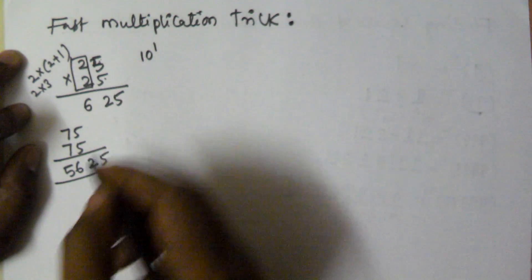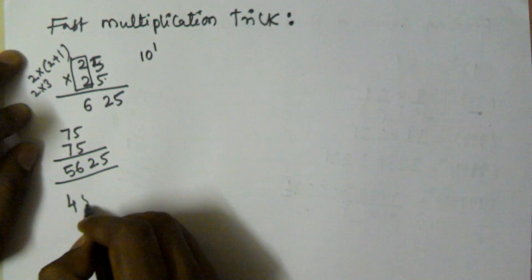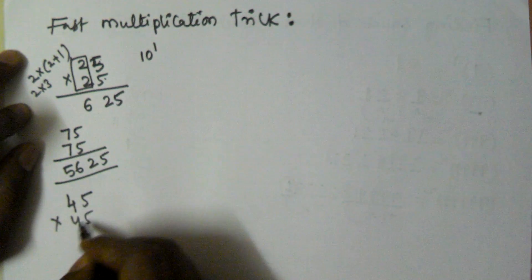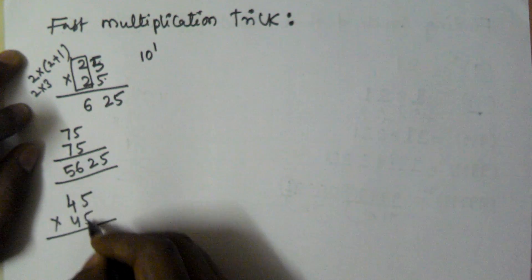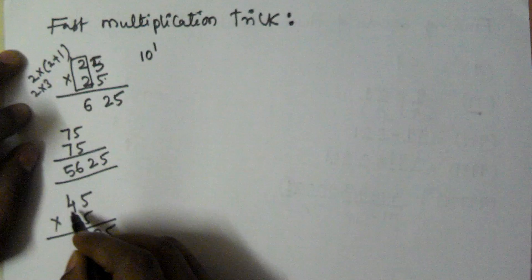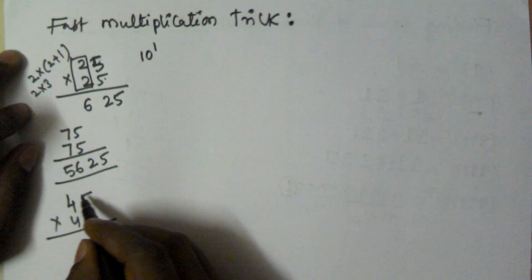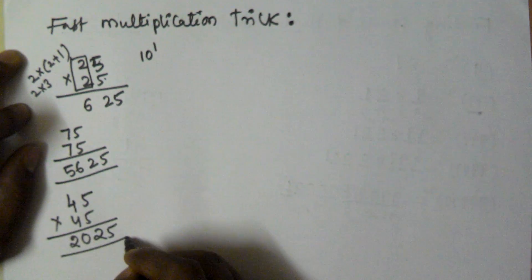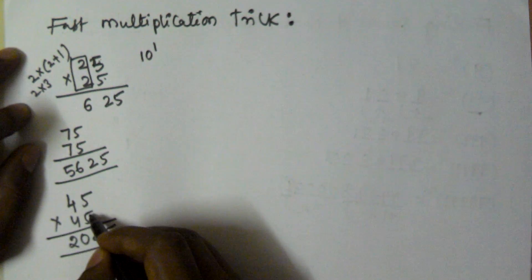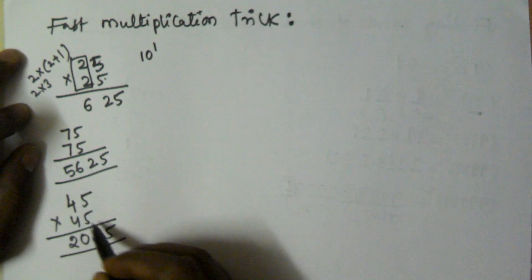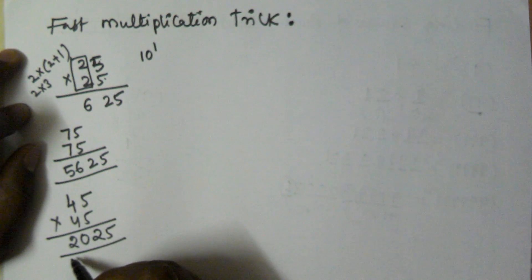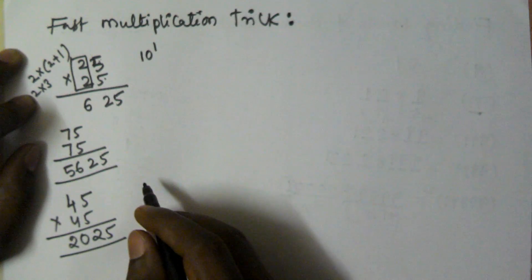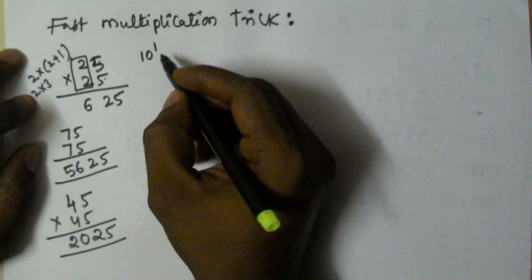In the same manner, 45 into 45: 5 into 5 is 25, and 4 into 4 plus 1 is 4 into 5, which is 20. So the value of 45 squared is 2025.